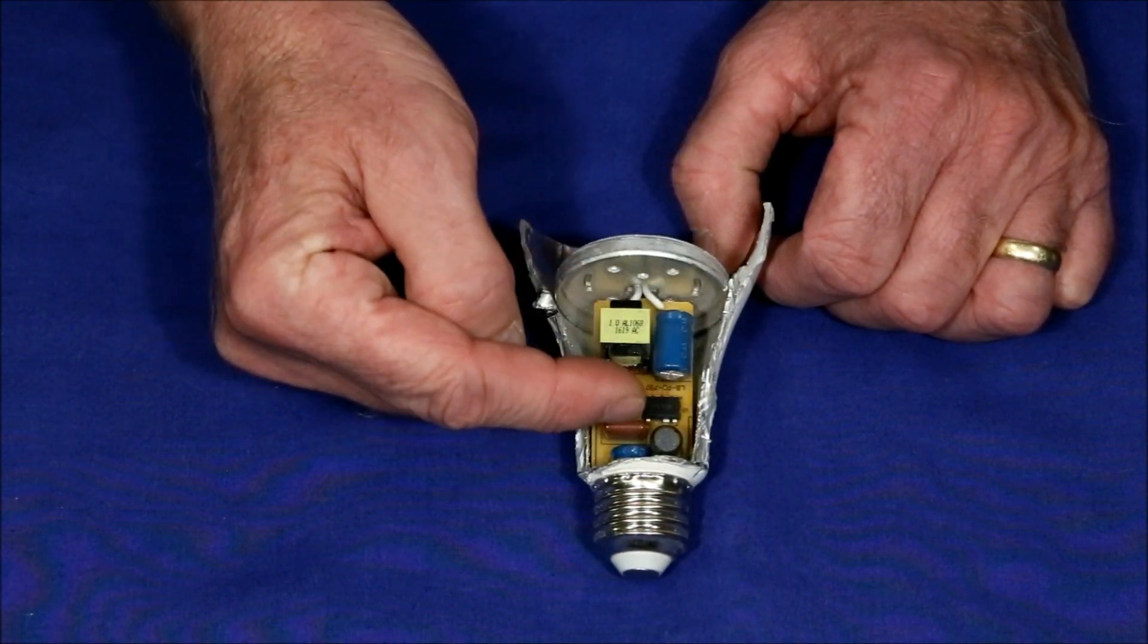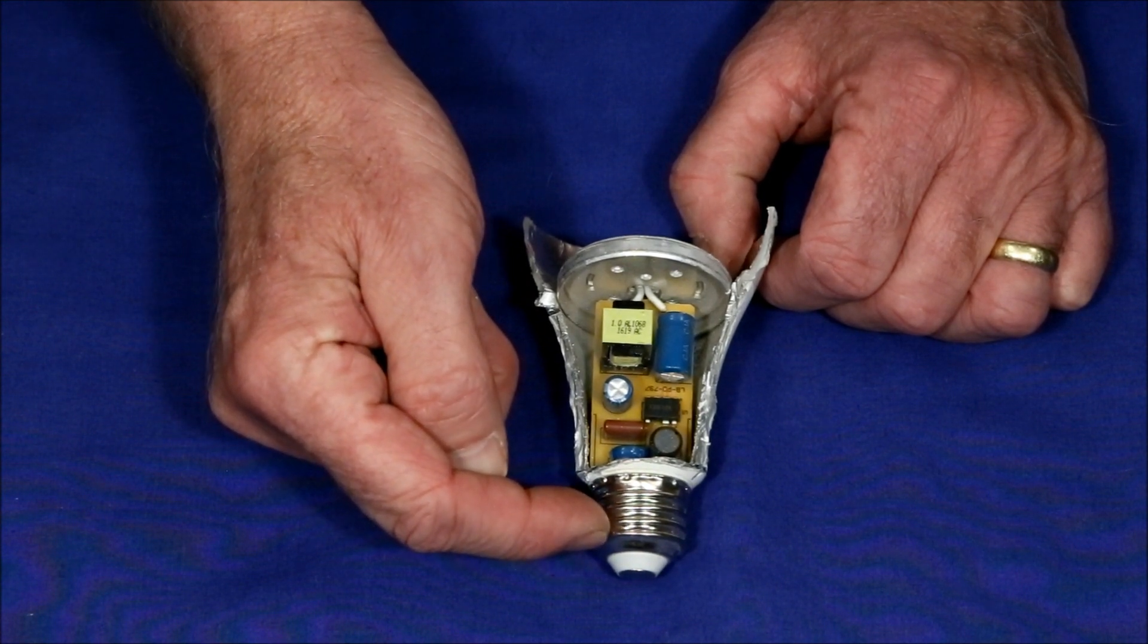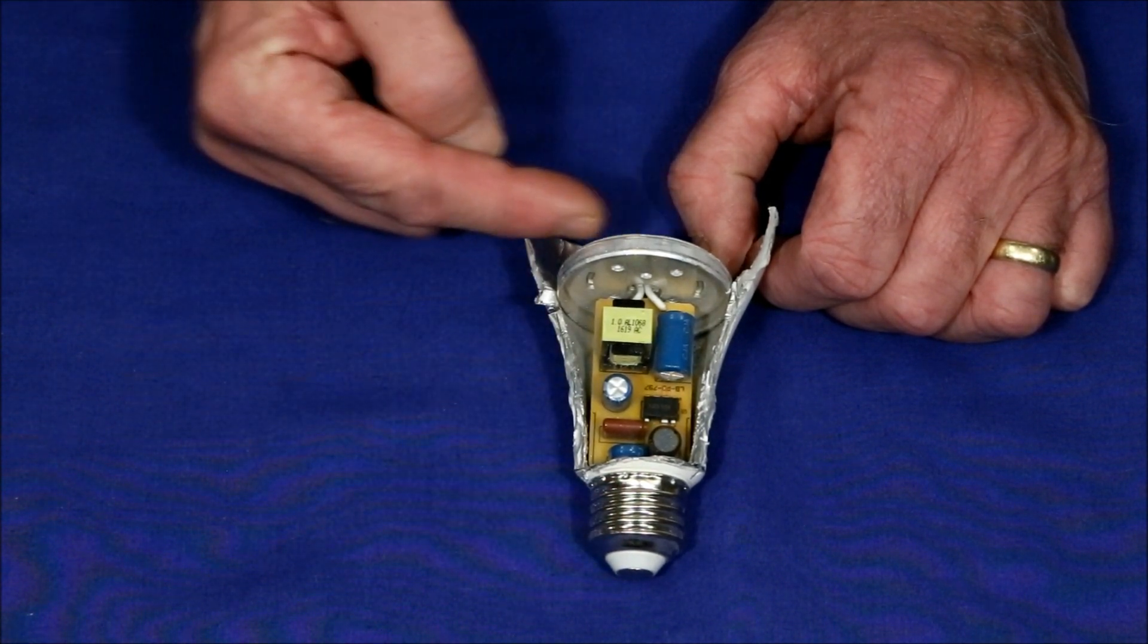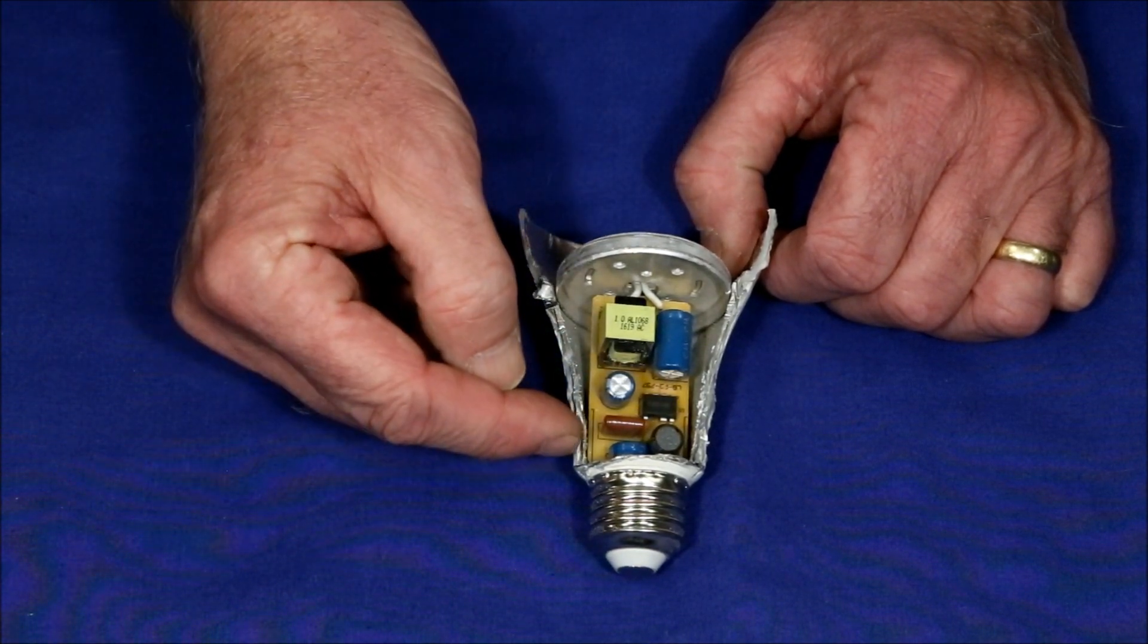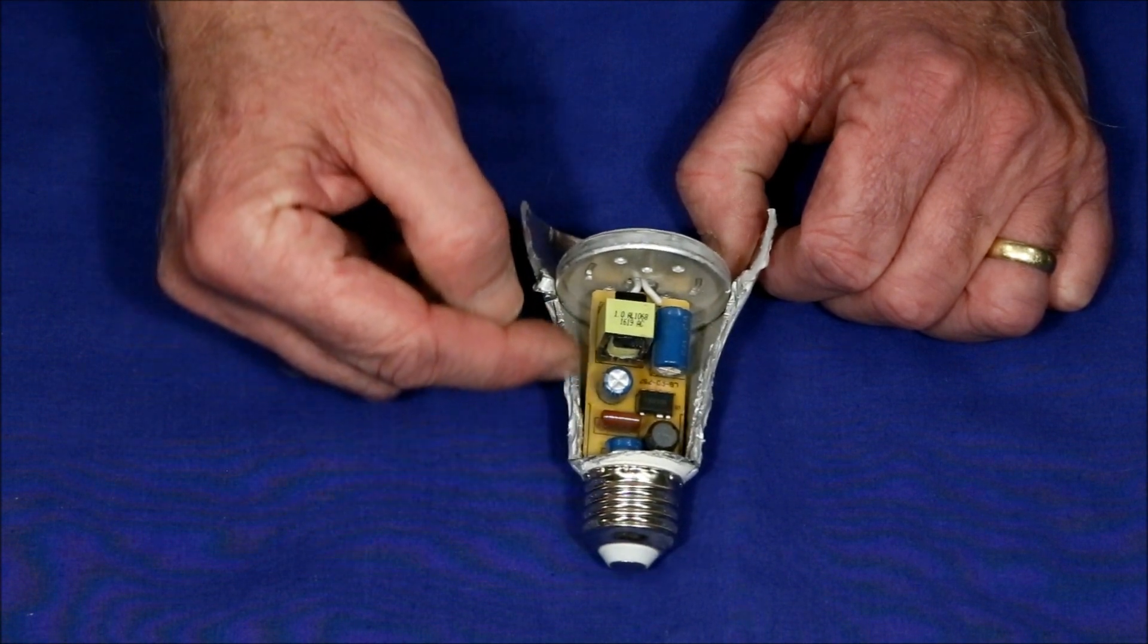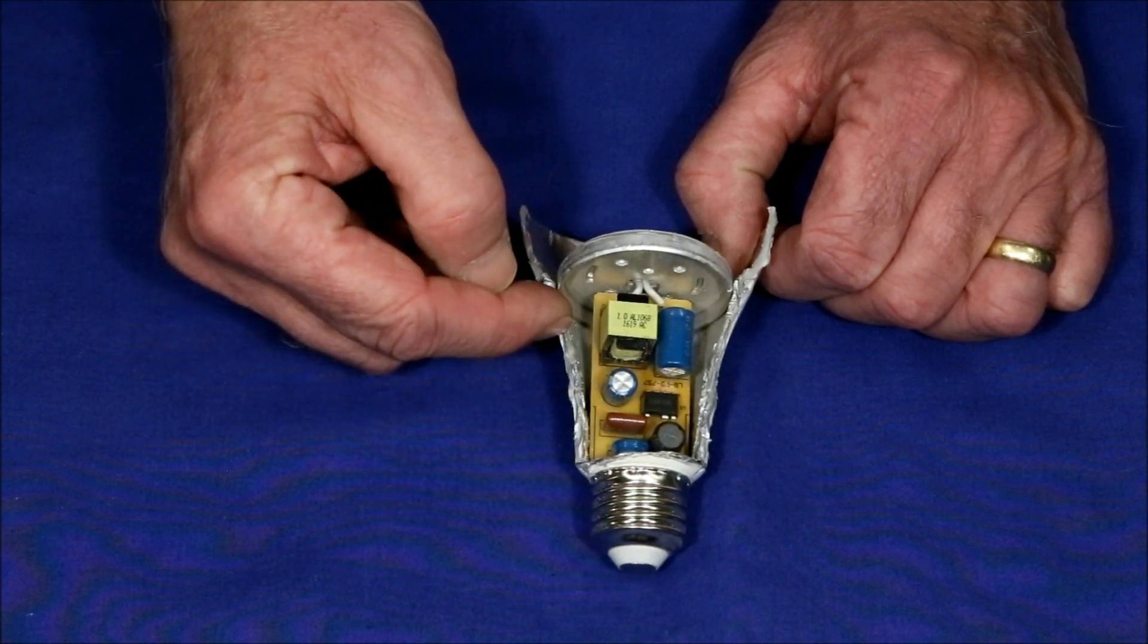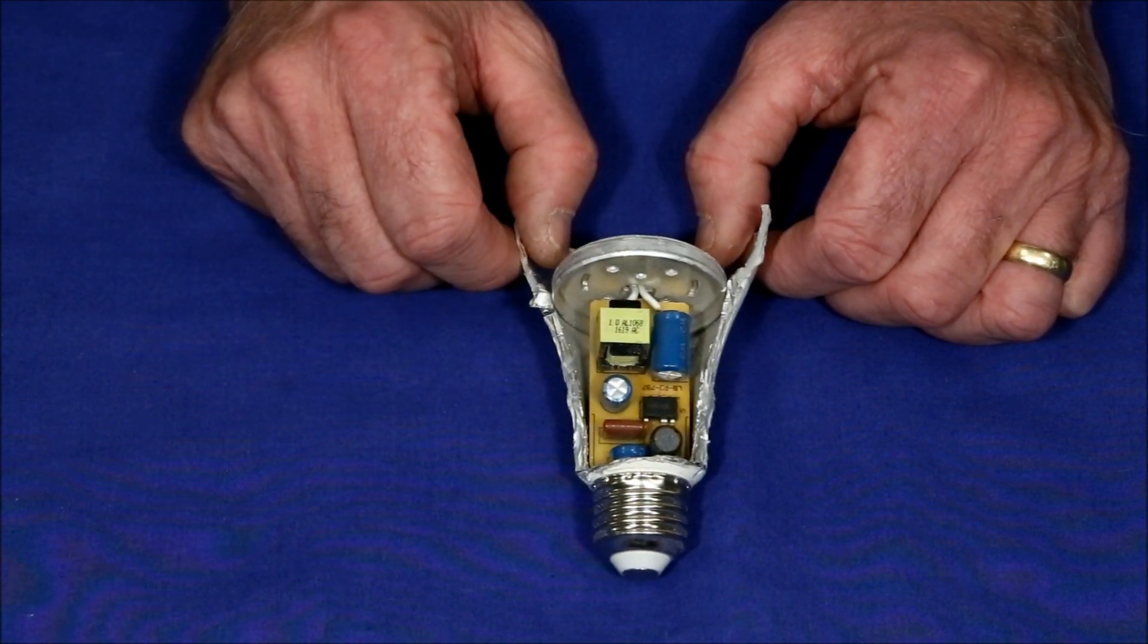And this is the circuitry required to change the voltage and current from what you get out of your wall socket to something that these LEDs can use. It's quite extensive really and another issue is that this base is actually a very thick aluminum cone which is expensive to make and difficult to assemble.